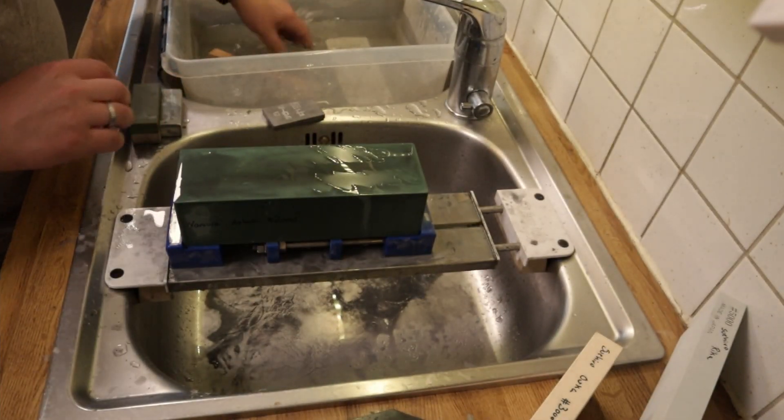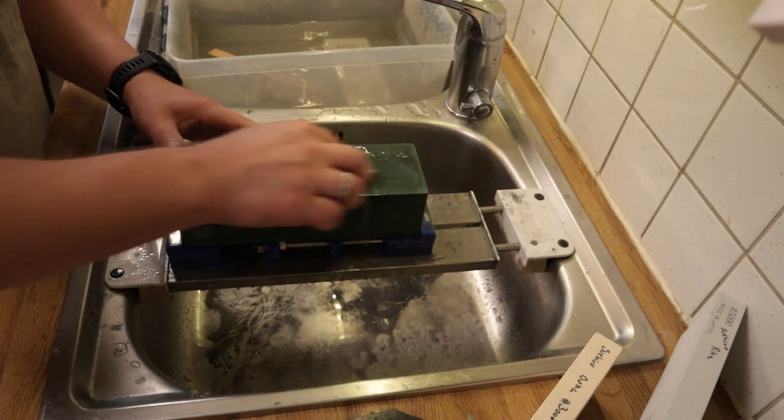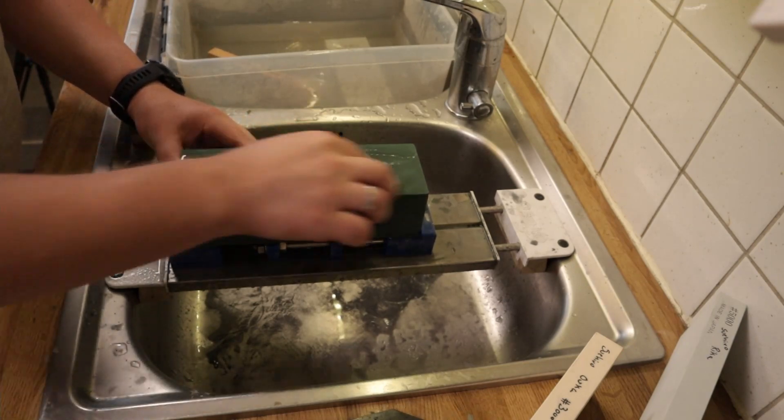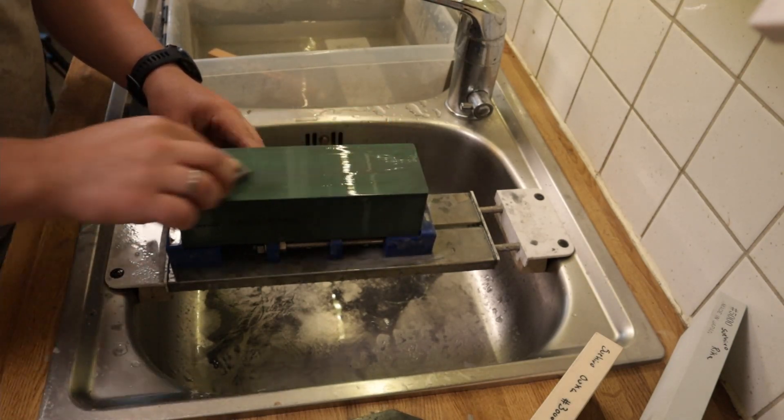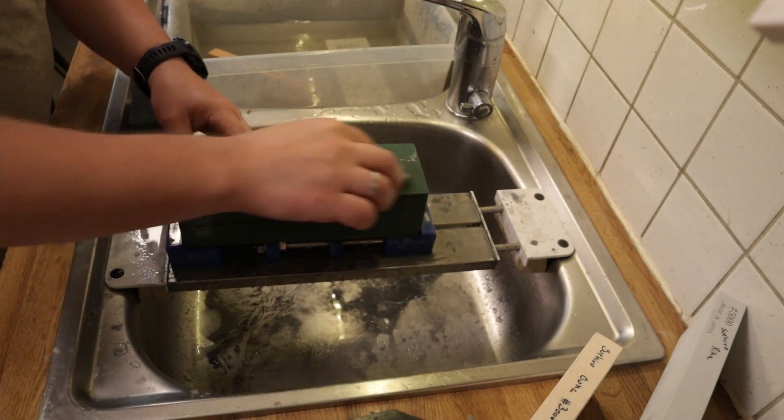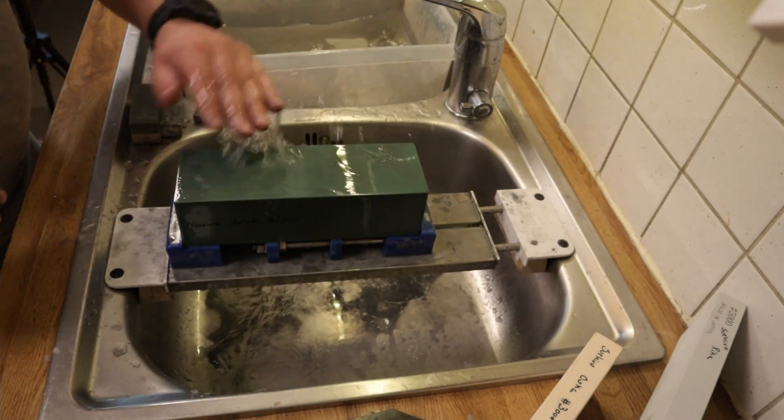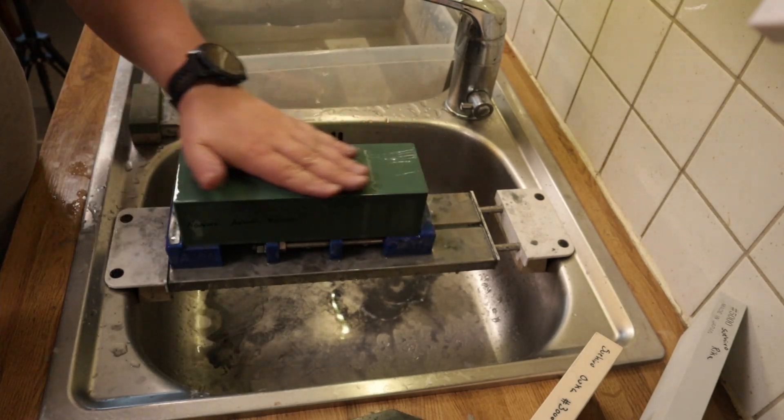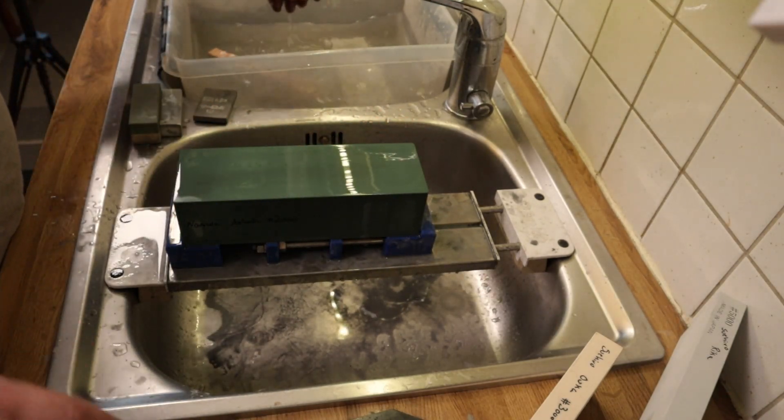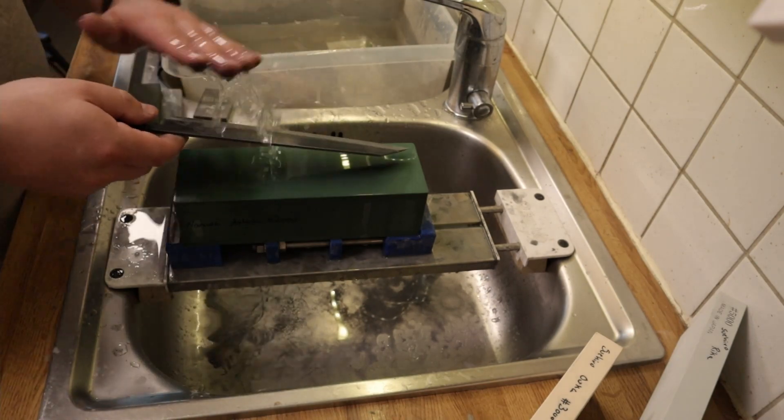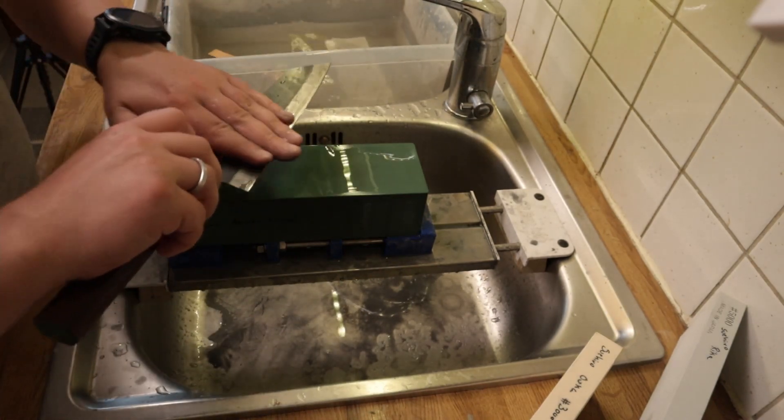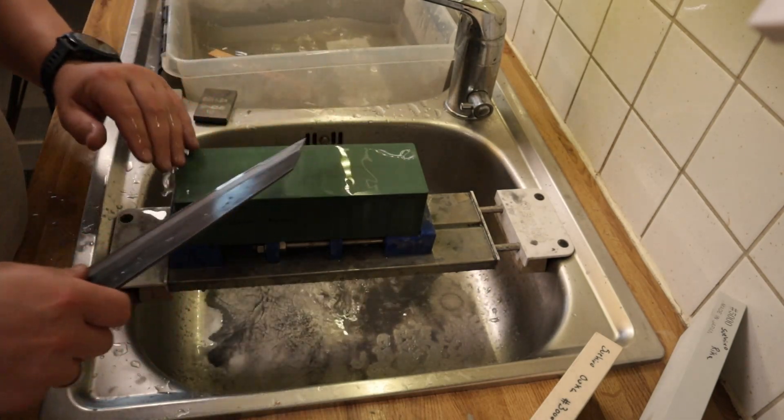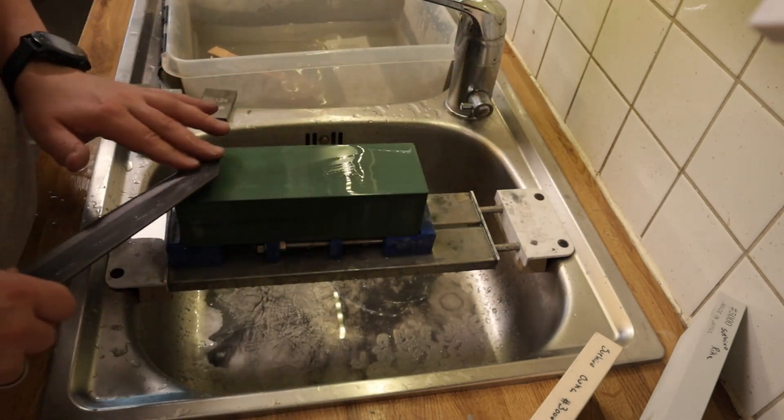So what you can do now, if you wanted to use this stone to polish with as well, then you clean it, or at least I like to clean it first. And you get rid of all the slurry to slow down how fast it's removing material. Well now you can just strop on the stone.